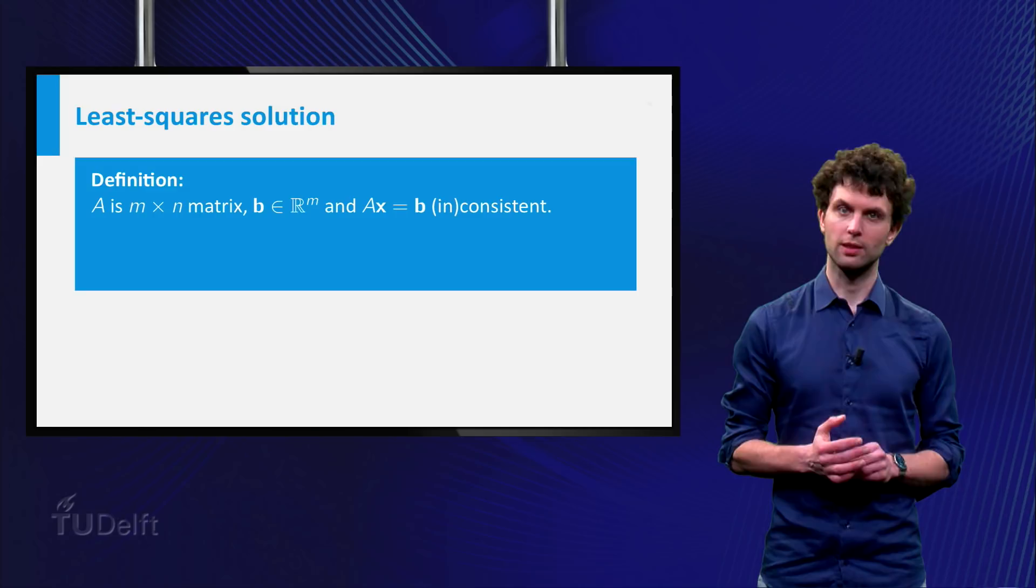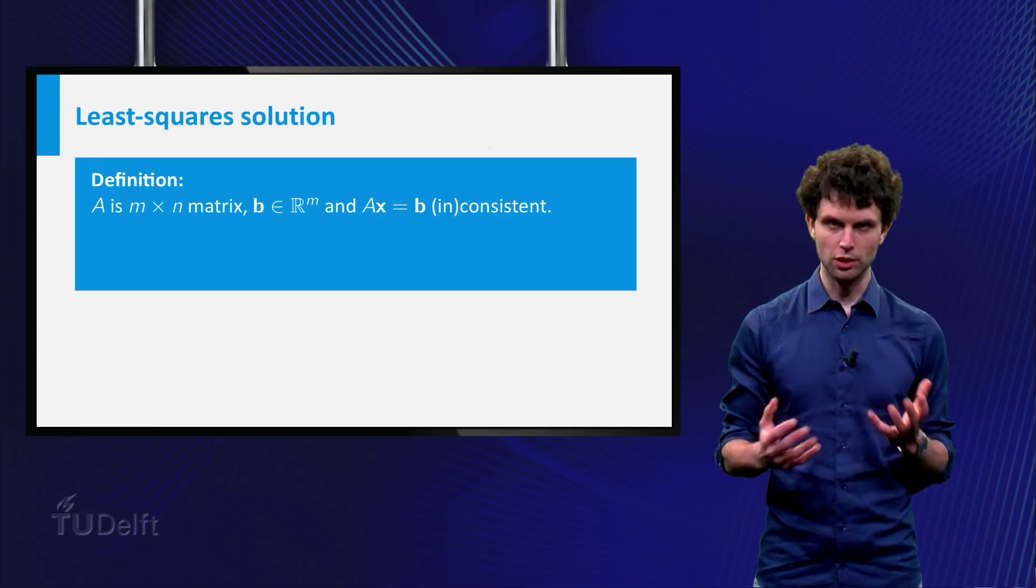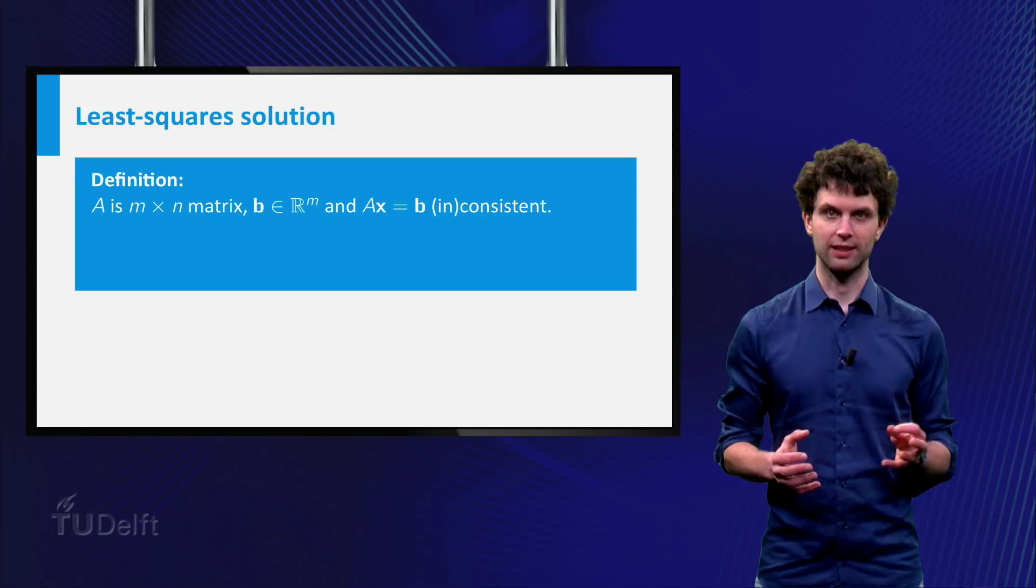In general, the least squares method deals with large systems of linear equations, which are usually inconsistent. But we would like to find a best, almost, solution anyway. So let A be an m by n matrix, and b a vector in R^m. And consider the system Ax = b, which might or might not be consistent.